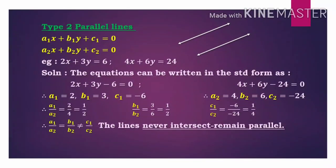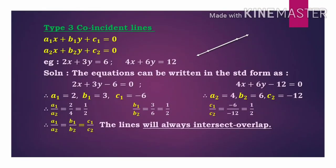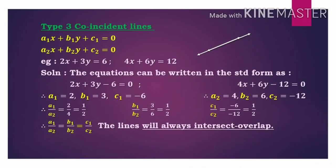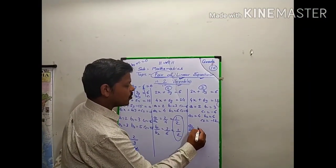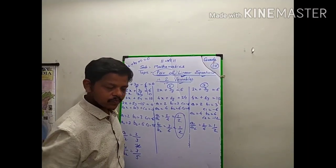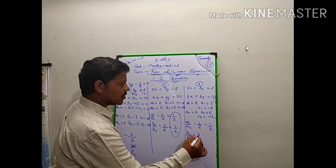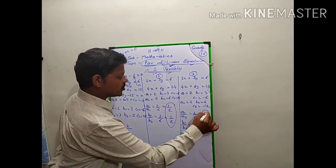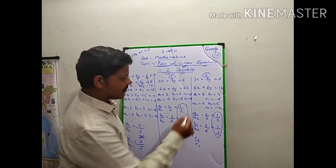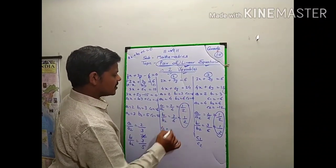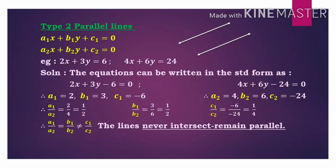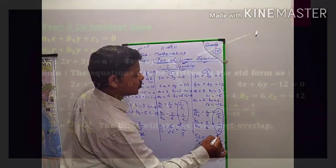Checking the third example: a1 is 2, b1 is 3, c1 is minus 6, a2 is 4, b2 is 6, c2 is minus 12. a1 upon a2 is 2 upon 4, which is 1 upon 2. b1 upon b2 is 3 upon 6, again 1 upon 2. So the first two ratios are equal. Now checking c1 upon c2: minus 6 upon minus 12 is again 1 upon 2. All three ratios are equal here. In the second example, c1 upon c2 was 6 upon 24 equal to 1 upon 4 — not equal to the first two ratios.